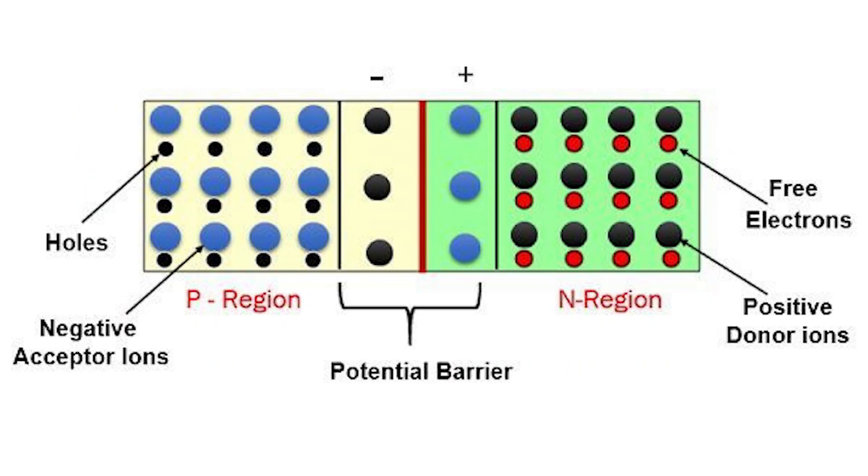The significance of this built-in potential across the junction is that it opposes the flow of both holes and electrons across the junction. That is why it is called the potential barrier.